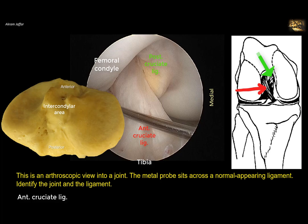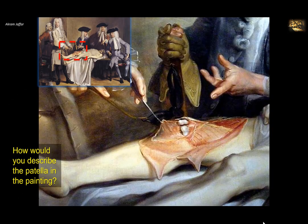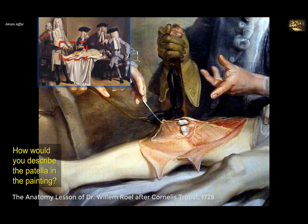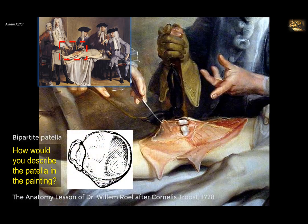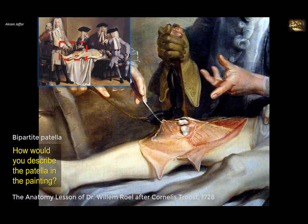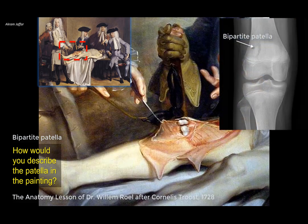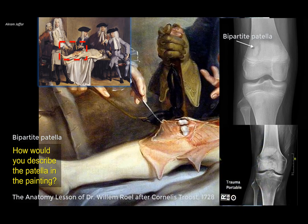How would you describe the patella in the painting — called 'The Anatomy Lesson of Dr. Willem Rowell'? A closer look shows the patella is in two pieces. This is called a bipartite patella, a normal variant present in approximately 2% of the population, representing an accessory ossification center that remains unfused. A bipartite patella is discovered incidentally in asymptomatic individuals and sometimes occurs bilaterally. The important thing is not to confuse it with a fracture of the patella on a radiograph.